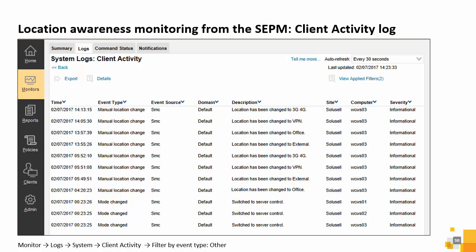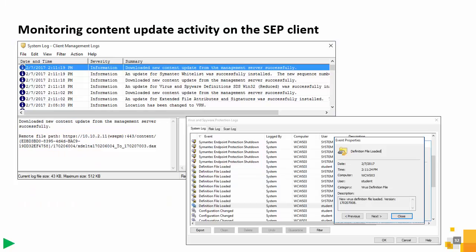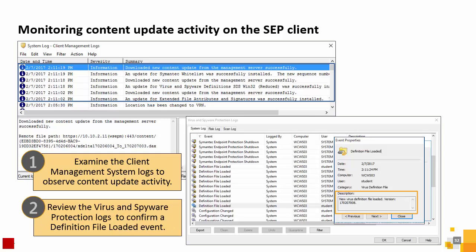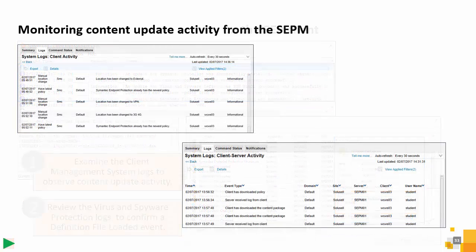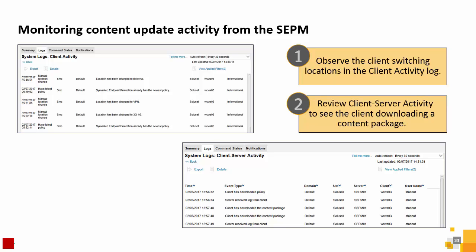Location awareness changes can also be seen in the client activity log on the SEPM. Now that SoluCell has tested the new locations, they are ready to proceed with ensuring that clients are able to download new content. You can monitor activity from the SEPM or directly on the SEP client. On the SEPM, build a timeline using the client server or client activity logs. On the SEP client, monitor the client management system or the virus and spyware protection system logs. To see content update activity, examine the client management system logs — it shows a timeline of the client switching to the new location, applying the new policy information, downloading content, and installing the update. You can also review the virus and spyware protection logs to confirm a definition file loaded event. From the SEPM, review the client activity log to see the client switching locations, and examine the client server activity logs to see the client downloading a content package.